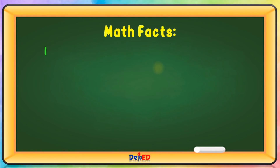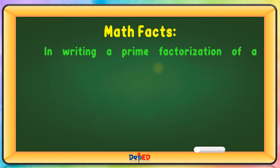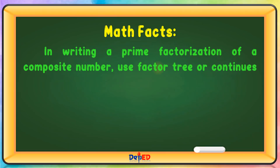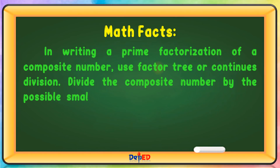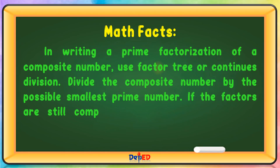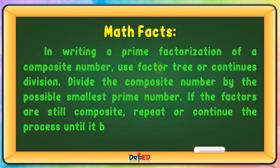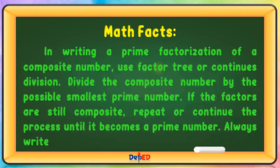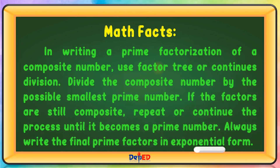Math Facts: In writing a prime factorization of a composite number, use the factor tree or continuous division. Divide the composite number by the possible smallest prime number. If the factors are still composite, repeat or continue the process until it becomes a prime number. Always write the final prime factors in exponential form.